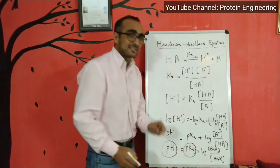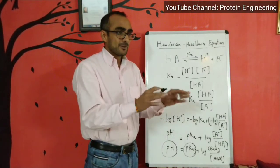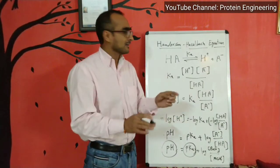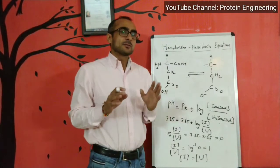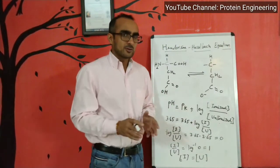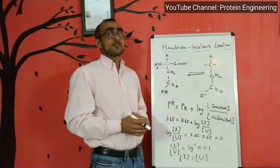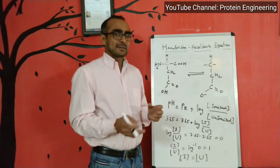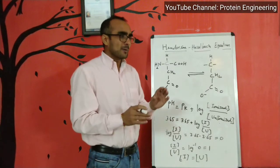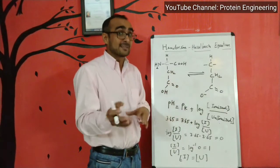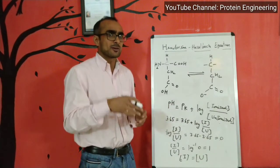pKa is fixed for a given compound, defined as the pH value where you have 50% ionization of the acid. There are two very obvious applications of the Henderson-Hasselbalch equation. One is while preparing buffers — when you mix acid and its conjugate salt, or base and its salt, you use this equation to determine how much acid and salt to add to make a buffer of a particular concentration and ionic strength.